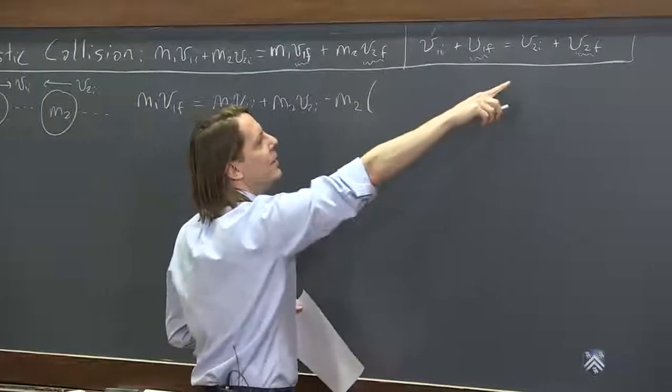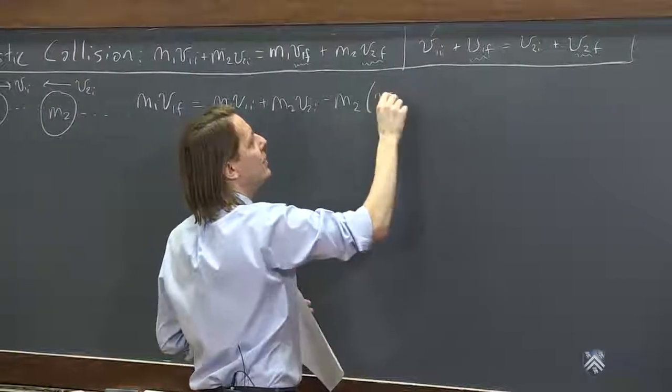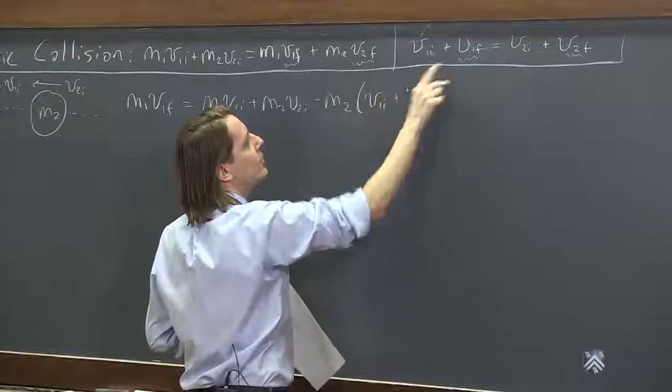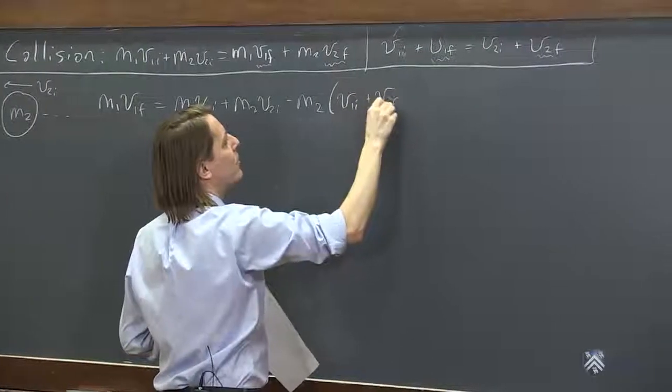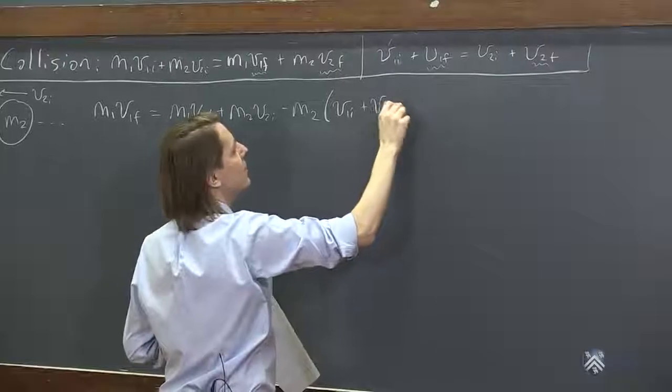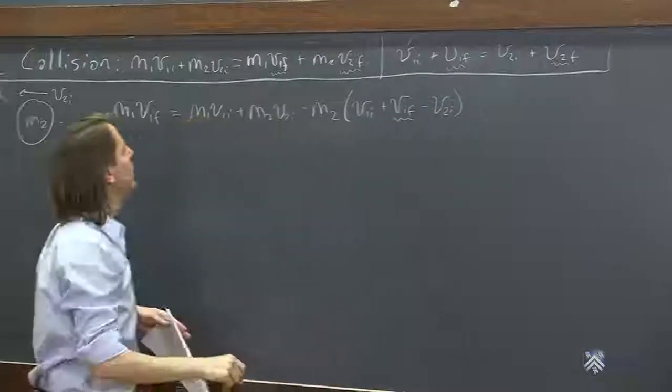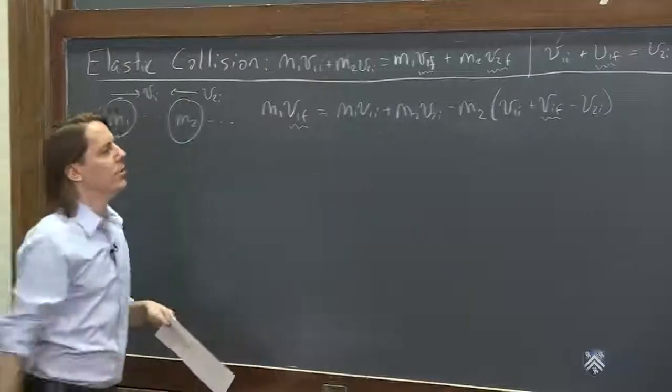This is the quickest way to get there. So this is equal to V1i, that's an initial known, plus V1f, that's the one we're looking for, minus V2i, another initial one that we know. So there's our unknown, and there's our unknown right there.